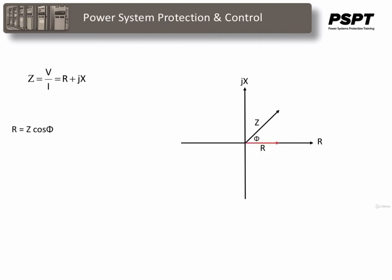R is the impedance Z times cosine of the angle. X is equal to the impedance times the sine of that angle. Theta is positive if I lags V, and negative if I leads V. Thus, V and I can be converted on an R-X diagram. The family of impedance relays, or distance relays, can offer a wide range of characteristics which we are about to look at.